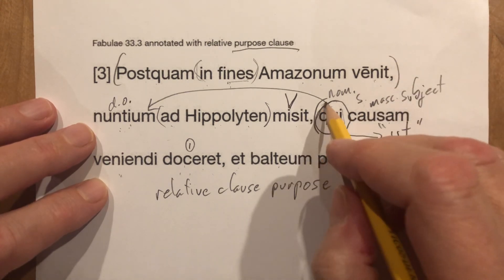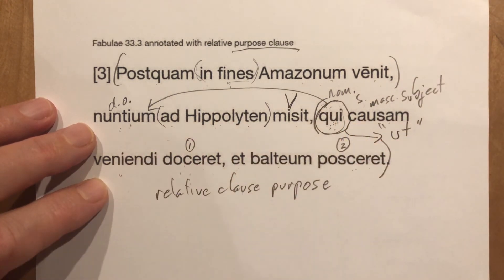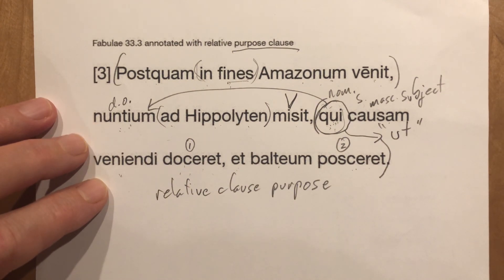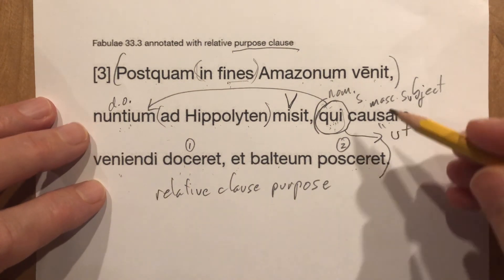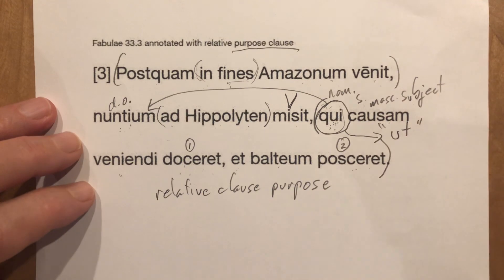The only complication — if you're writing it in Latin — you've got to make this agree with the antecedent. Otherwise, it's just a regular purpose clause, and we translate it with that infinitive.